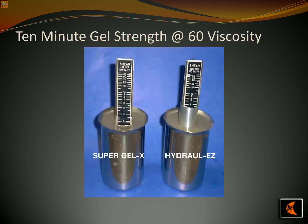We'll discuss the 10-minute gel strength at 60 viscosity for two of our best-selling bentonite mining products: SuperGEL-X and HYDRA-L-EZ. Both products can expand up to 20 times their volume when absorbing water, making them perfect materials for mixing water and dense particles. SuperGEL-X is a special type of bentonite clay that can form a strong gel within 10 minutes when combined with liquid, with a viscosity rating of 60. HYDRA-U-L-EZ is another bentonite clay designed to form a strong gel structure with a maximum 10-minute gel strength of 60 viscosity, ensuring a powerful mix of water and particles can be achieved quickly and efficiently.